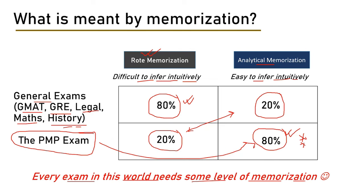For agile terminologies — sprint, backlog, scrum, retrospective, backlog refinement, spike, etc. — when studying for your PMP exam, go back to your Agile Practice Guide and learn these things in context. There are videos on my YouTube channel as well which give you the analytical sense of how to learn these things, helping you interpret them as analytical memorization rather than rote memorization. Going back to my basic premise: take the taboo out of your mind — all theoretical exams need some memorization.